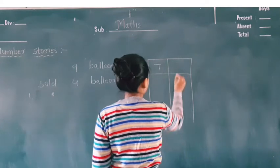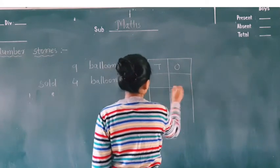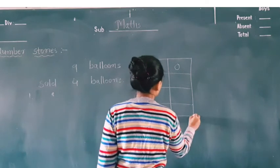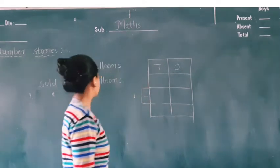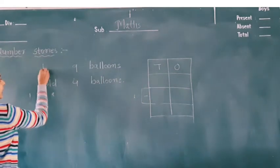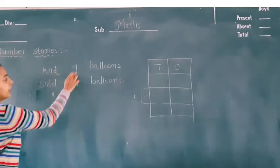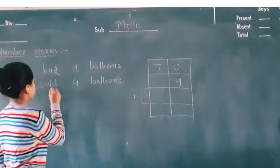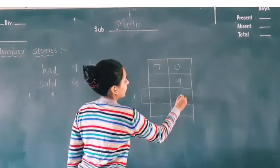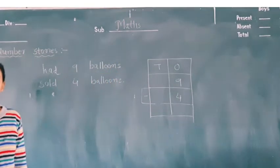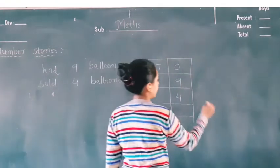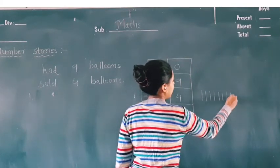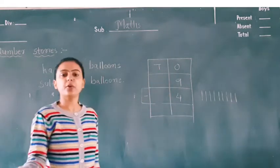As we all know, tens and ones. The balloon seller had 9 balloons, and he sold 4 balloons. So 9 - we write 1, 2, 3, 4, 5, 6, 7, 8, and 9. And he sold 4 balloons.